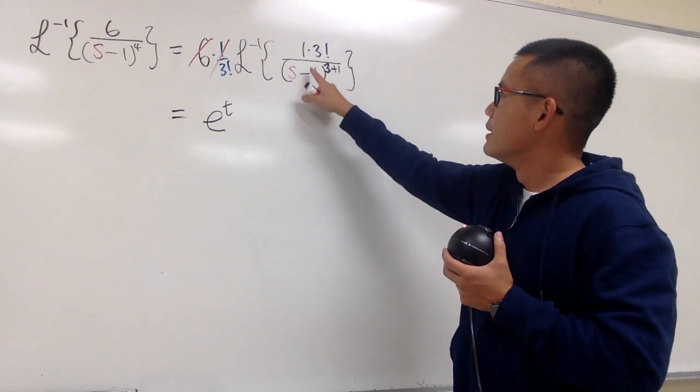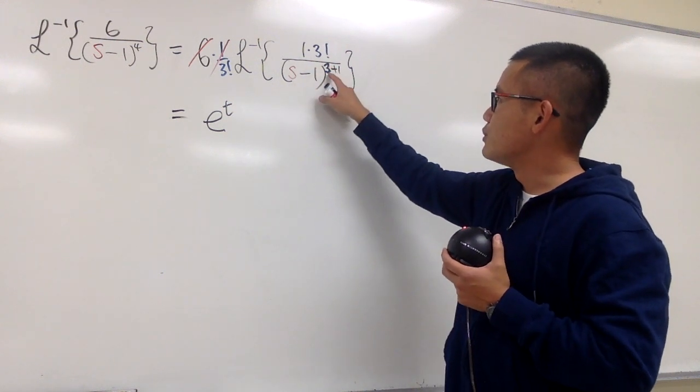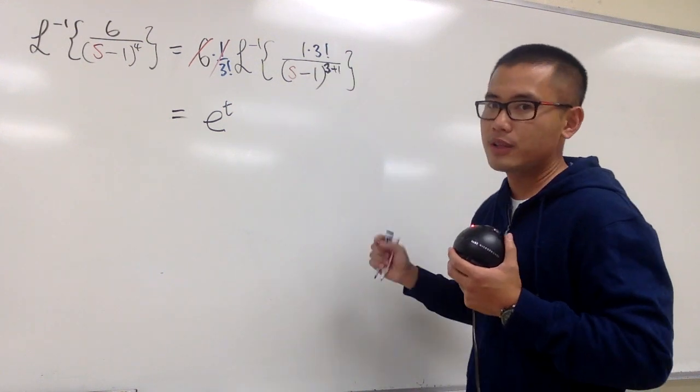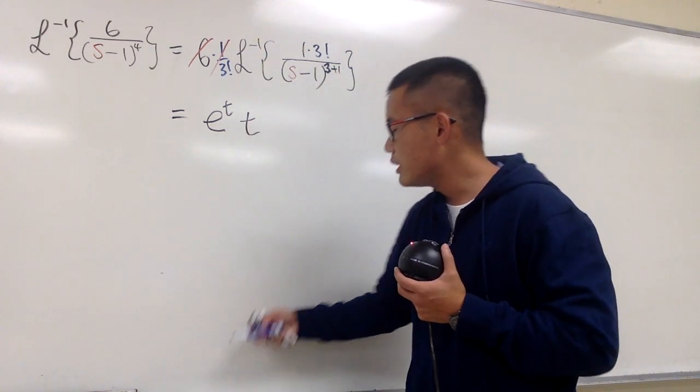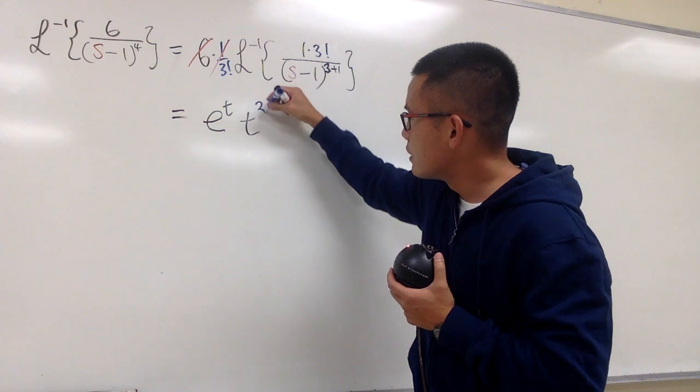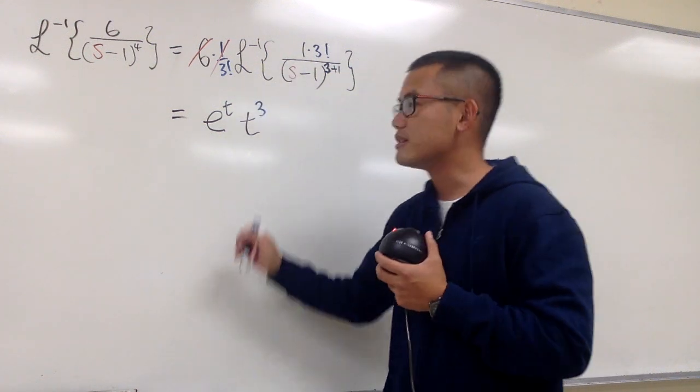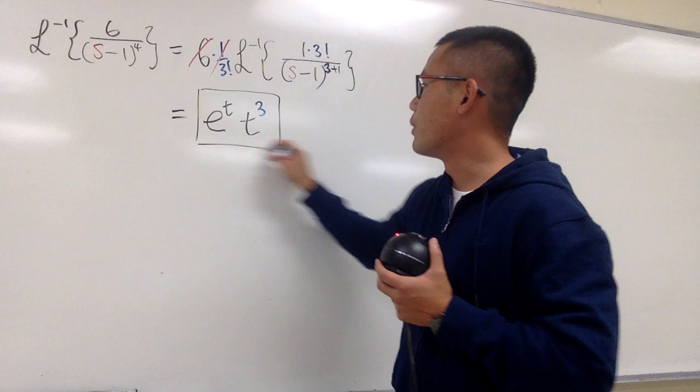And then, when we have 1 over something to the 3 plus 1, and on the top we have the factorial already, this is going to give us t to the 3rd power. So, the answer is e to the t times t to the 3rd power.